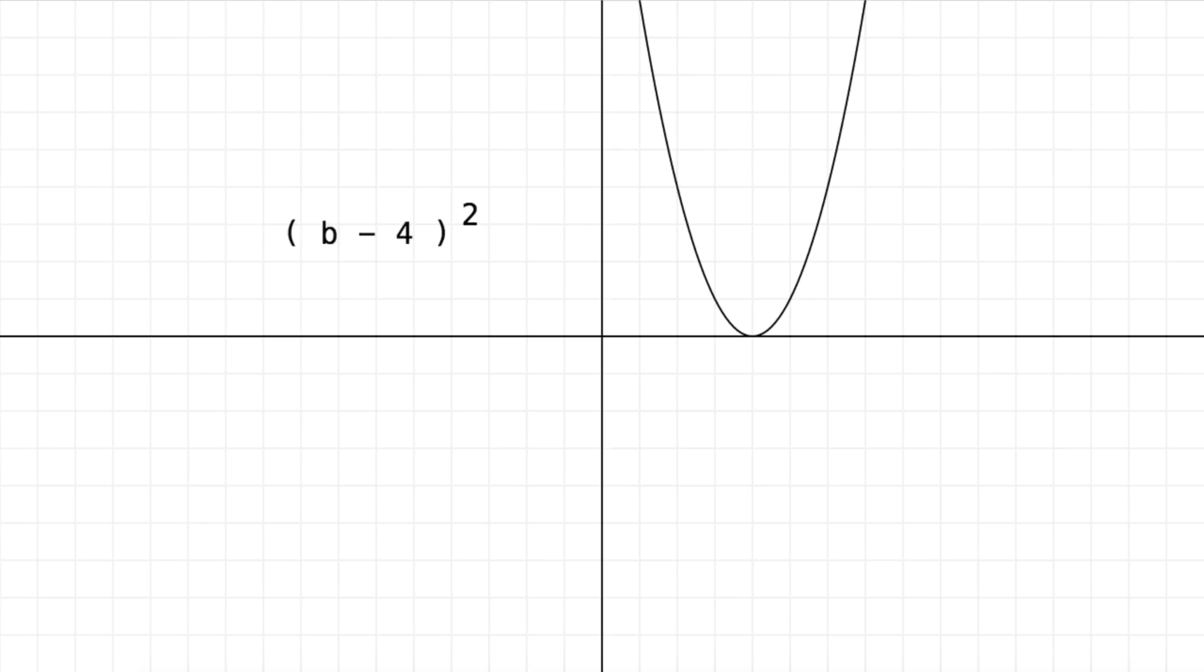Now what property of the cost function can we use to tell us how to change b? Should we increase it or decrease it? You want to take a guess you can use the slope of the cost function. So right now you're seeing something called a tangent line.